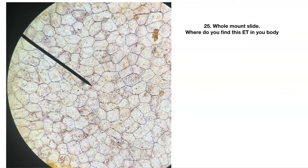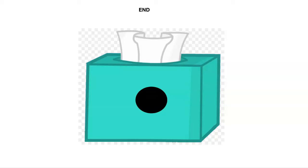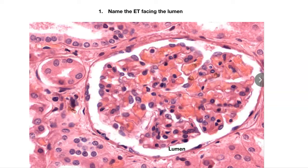That's the end of our epithelial tissue quiz. Now we're going to go back and see how you did. Name this epithelial tissue facing the lumen — simple squamous. This is simple squamous: one layer thick, and the nuclei are flat.